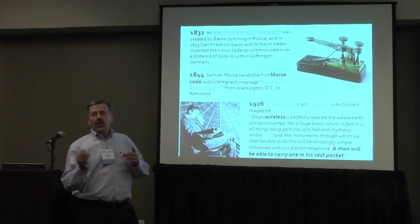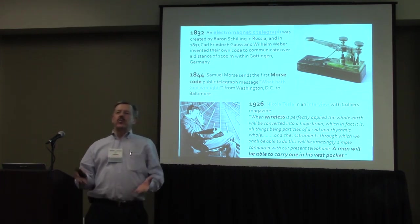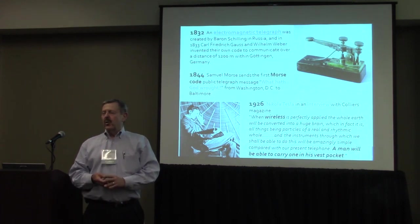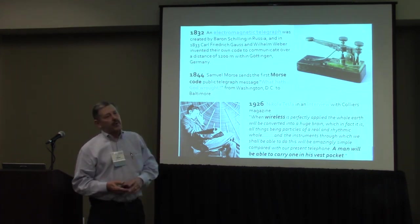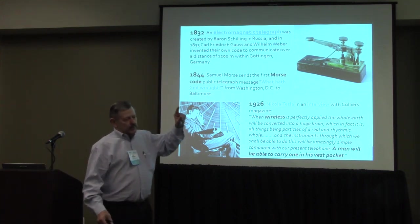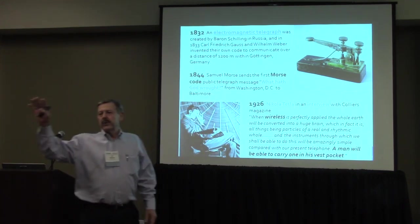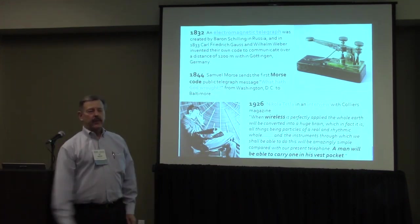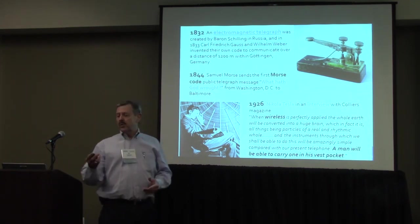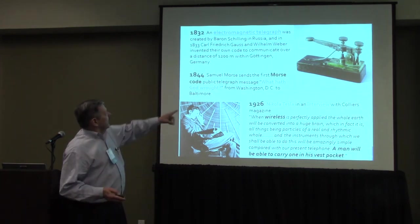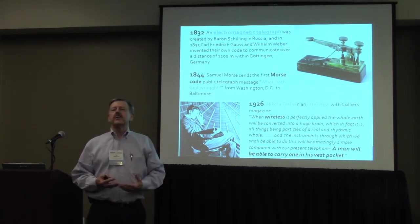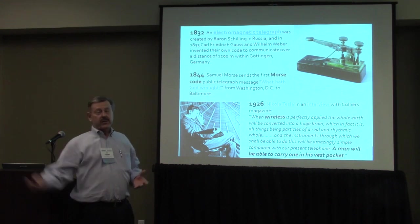The first example of machine-to-machine communications was the telegraph. Back in 1832, a Russian created it. In 1883, two Germans implemented that with over 1,200 meters, allowing somebody to push a button at one end and cause something else to happen at the other end. That's the definition, basically, of the Internet of Things or machine-to-machine communications.